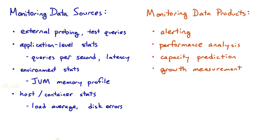Also for growth measurement — you can plot a graph from your monitoring system and see that your service is doubling traffic every three months. You can combine that with capacity prediction to get capacity needs forecasting, telling you how many computers you're going to need next quarter. And last but not least, your monitoring system can also provide great metrics for debugging problems. For instance, if you notice each instance is using more and more memory proportional to the number of user queries, that might indicate a memory leak.